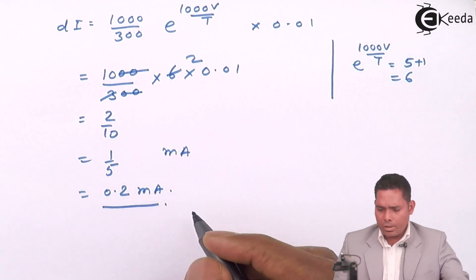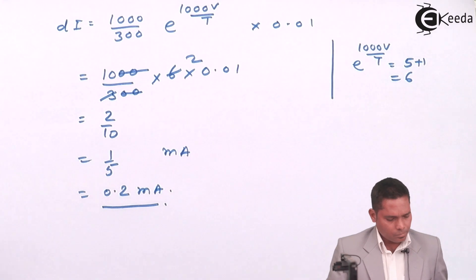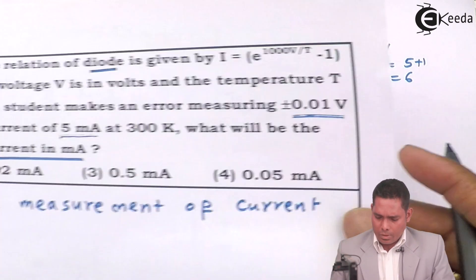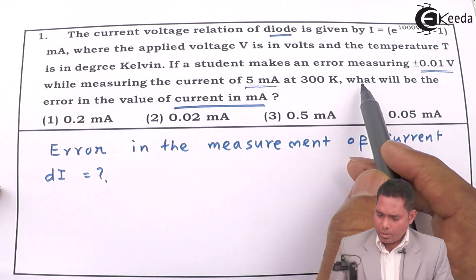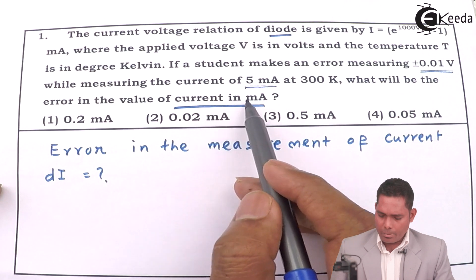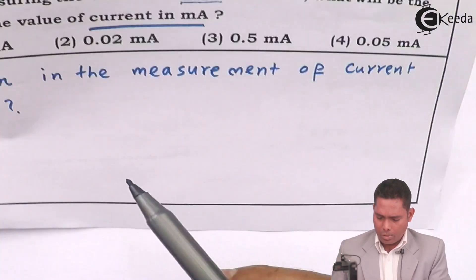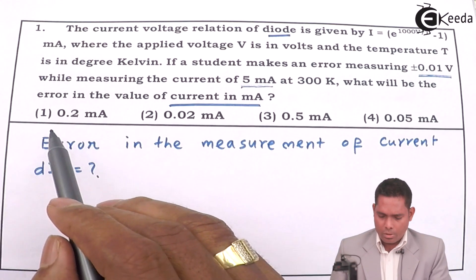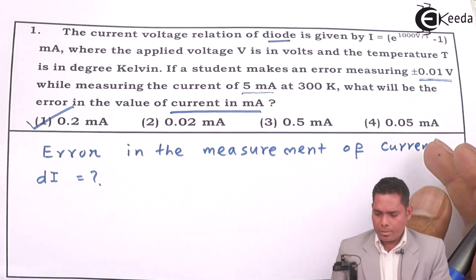So if I see the option - what will be the error in the measurement of the current in milliamps is 0.2. Our answer is 0.2, so this is the correct answer.